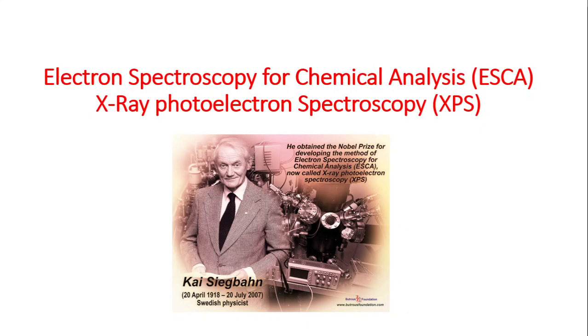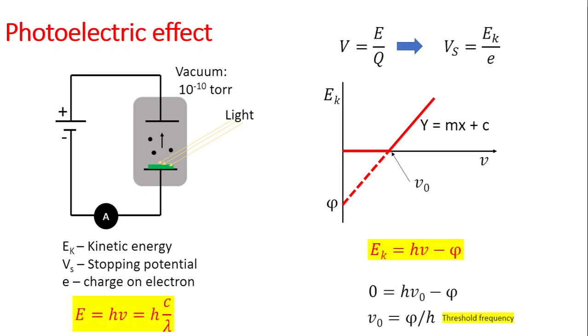We'll learn about the working principle of XPS and its applications. XPS is based on the photoelectric effect, for which Albert Einstein was awarded the Nobel Prize in the 1920s. This describes how light interacts with materials. From Max Planck's equation, energy is defined as E = hν, where ν is frequency, or E = hc/λ, where c is the speed of light and λ is wavelength.